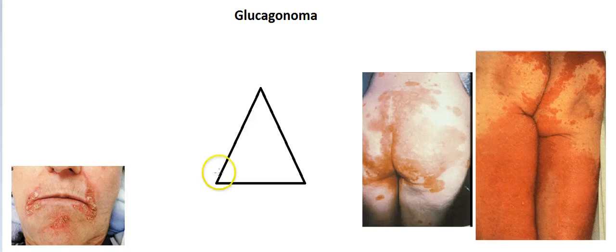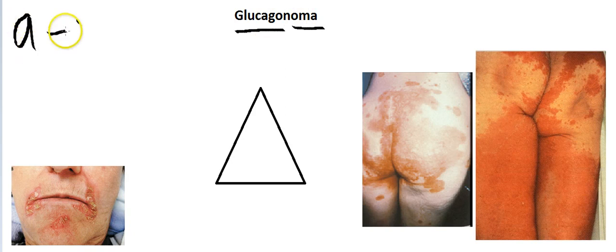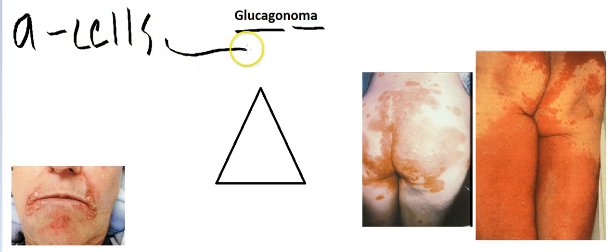Hi guys, this is Easy as One Two Three and today we are going to talk about glucagonoma. As the name suggests, glucagonoma is a glucagon-producing tumor. Glucagon is produced by the alpha cells in the pancreas, so it is a tumor of alpha cells in the pancreas.